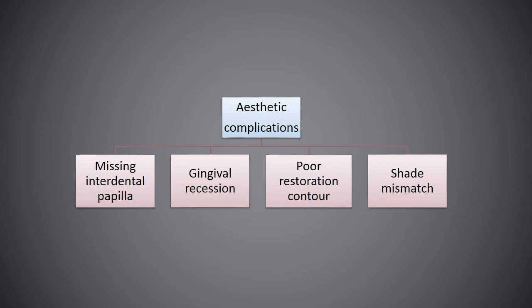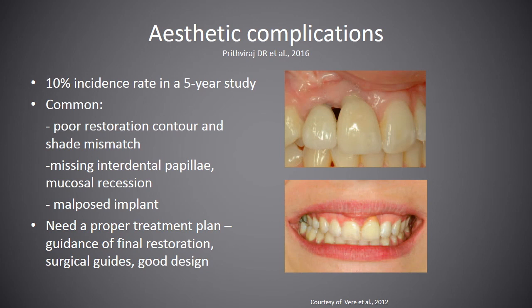Another complication of dental implants is aesthetic complications. Aesthetic complications detract from the overall appearance of the implant-supported prosthesis. Missing interdental papillae, mucosal recession, poor restoration contour, and shade mismatch may all cause aesthetic failure. Aesthetic results of dental implants cannot be predicted. Henry et al. reported a 10% incidence rate of aesthetic implant complications in a 5-year study.